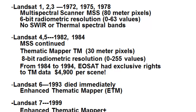Landsat 8 data is free, Landsat 7 data is free, and Landsat 4 and 5 data is currently free. But from 1984 to 1994, Landsat data was privatized — operated by a company called EOSAT that had exclusive rights to Landsat data. The problem was it cost $4,900 per scene, so during that era very few scenes were acquired, leaving a fairly large gap, especially in Alaska, for Landsat scenes from 1984 to 1994.